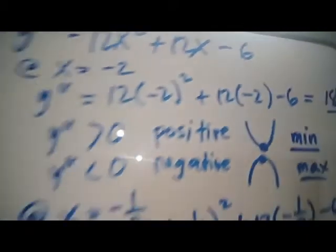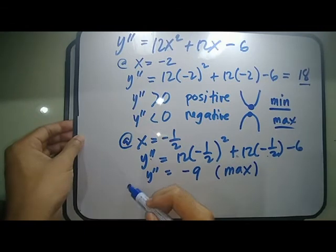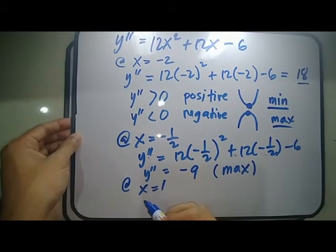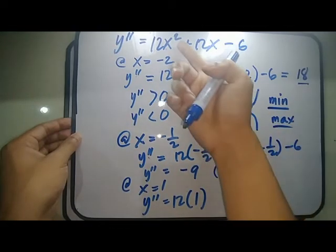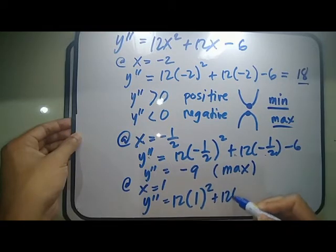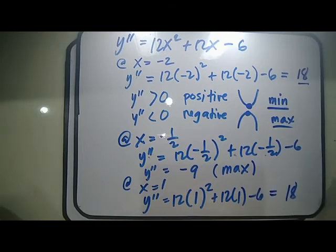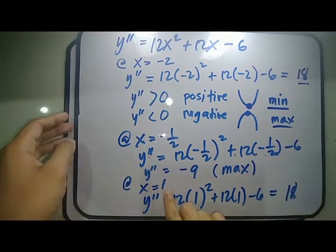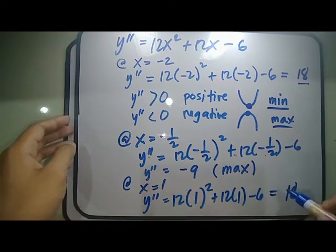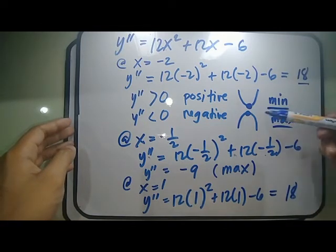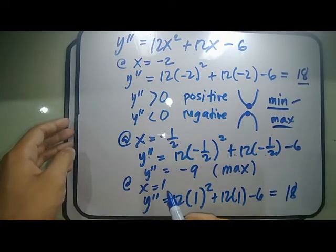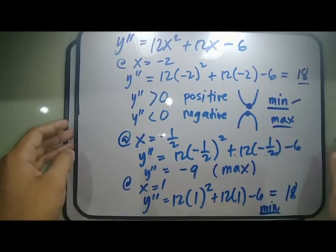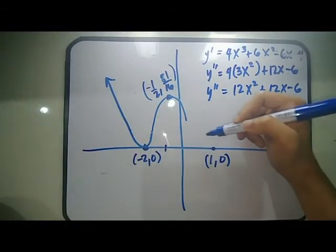At x equals 1, y double prime equals 12 times 1 squared plus 12 times 1 minus 6, which equals 18. Since y double prime at x equals 1 is positive, the graph is concave upward, so this is a minimum. So at x equals 1, that is a minimum — concave upward.